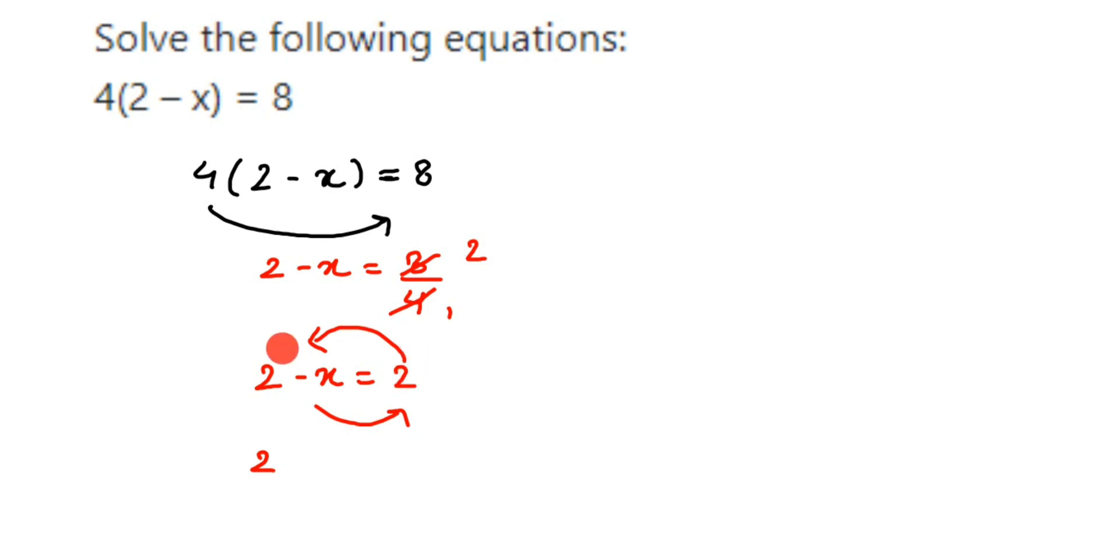So transpose minus x here and 2 to this side. When you transpose 2 to the other side, its sign is positive, so it will become minus. So minus 2 is equal to, and minus x when transposed to the right hand side becomes x. 2 minus 2 is 0, so therefore we got x is equal to 0. That's it.